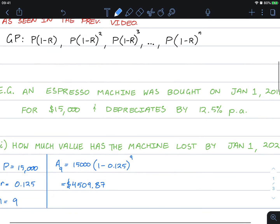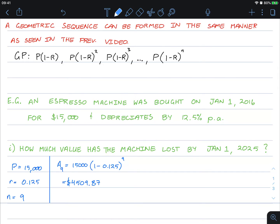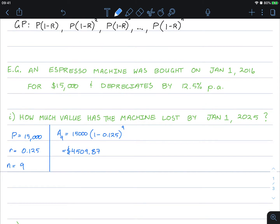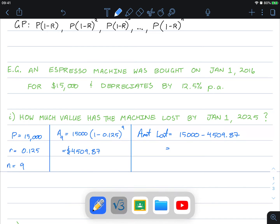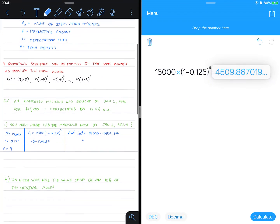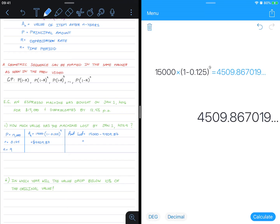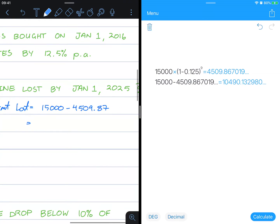However, the question specifically asked how much value has the machine lost by January 1st. So this here is the current value of the item. The amount lost is the original value, 15,000 minus $4,509.87. I will do 15,000 take away that amount. It's lost $10,490.13.